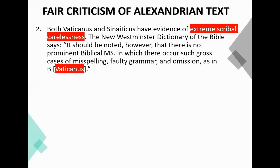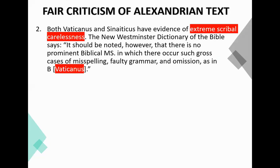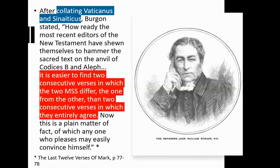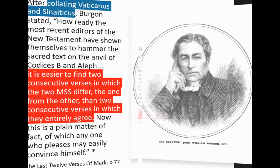Origen, an early church father who lived in Alexandria in the third century — from the very place these texts came from — complained that there were corrupt manuscripts in existence and that copyists were being negligent. Both Vaticanus and Sinaiticus have evidence of extreme scribal carelessness. The New Westminster Dictionary of the Bible says there is no prominent biblical manuscript with such gross cases of misspelling, faulty grammar, and omission as Vaticanus. John William Burgon, who was familiar with the documents, said of Sinaiticus that the New Testament was extremely unreliable — on many occasions 10, 20, 30, 40 words are dropped, and letters, words, even whole sentences are frequently written twice over or immediately cancelled.